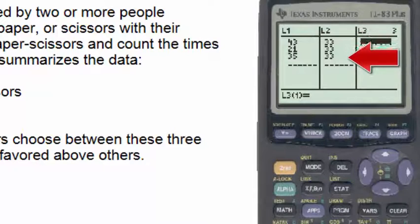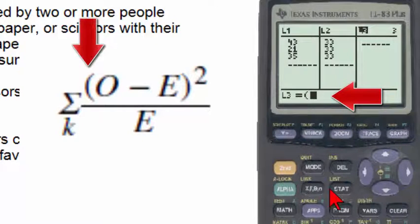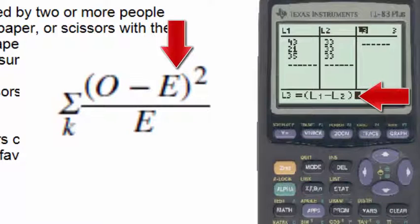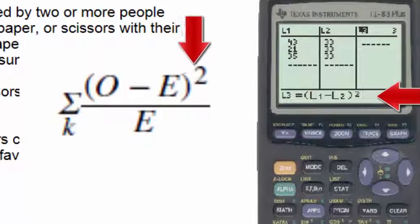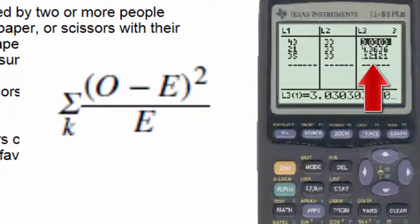To find the chi-squared test statistic we'll go to the title of list three and on the formula bar we'll start with the parentheses followed by list one minus list two and the parentheses, the quantity squared divided by list two, and when we hit enter we get the contribution of each event to the chi-squared test statistic.